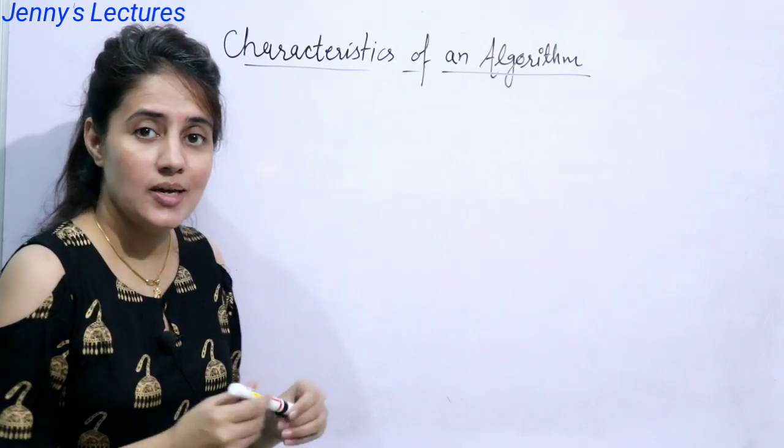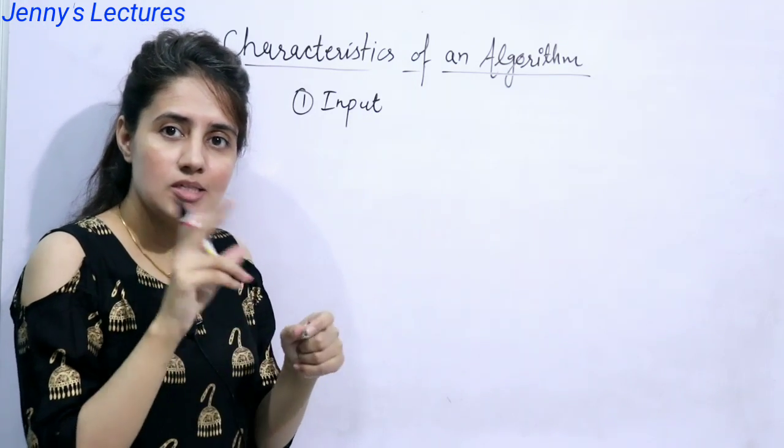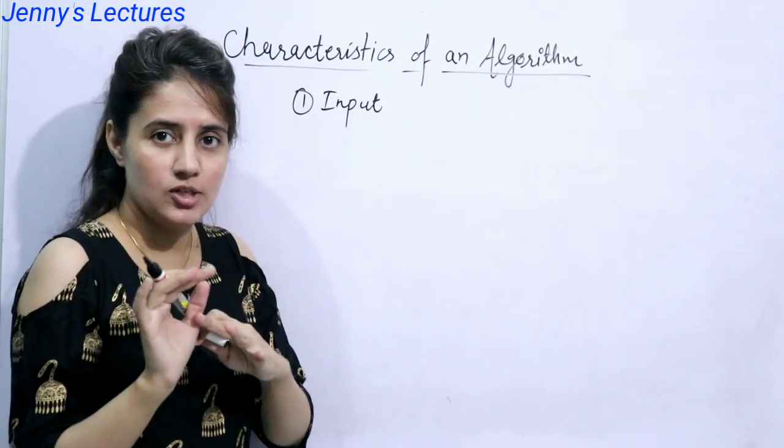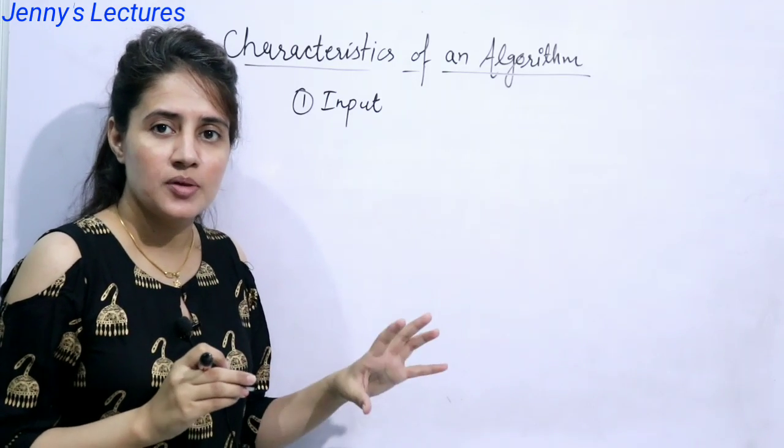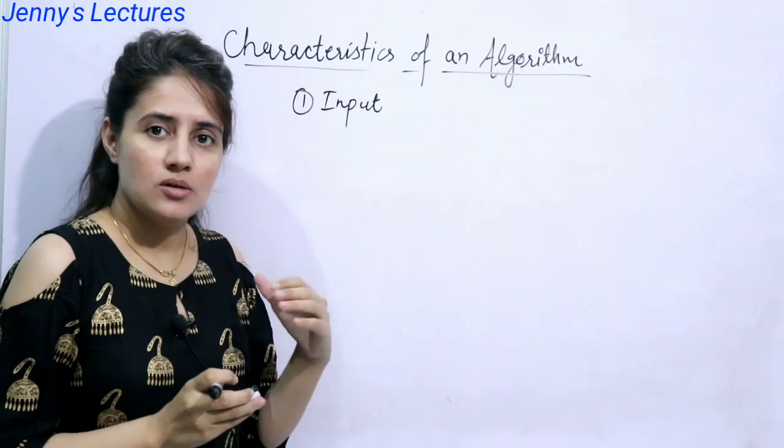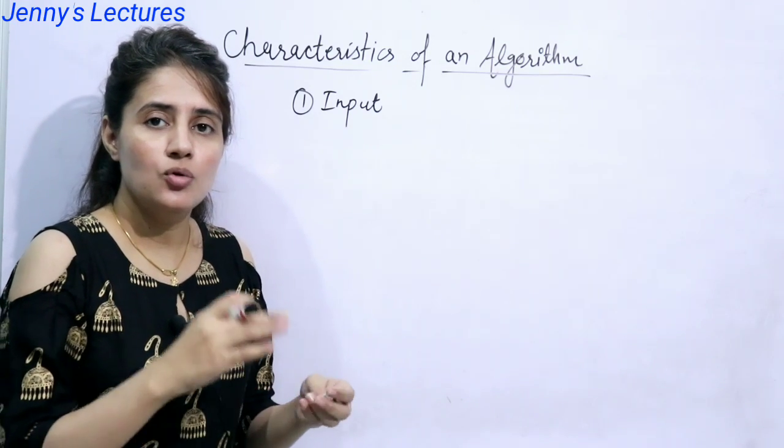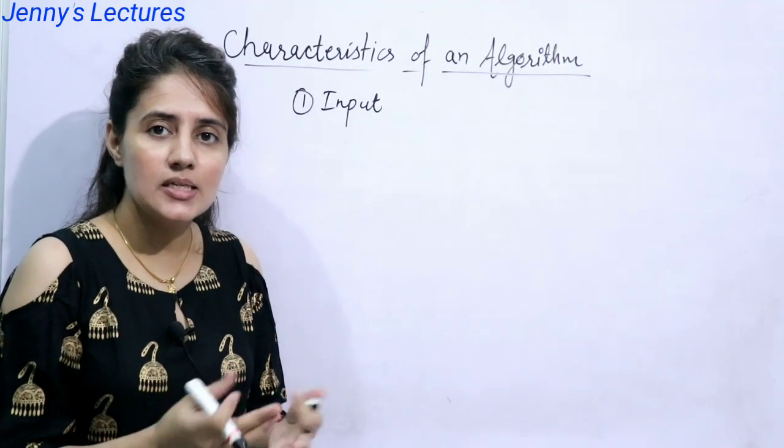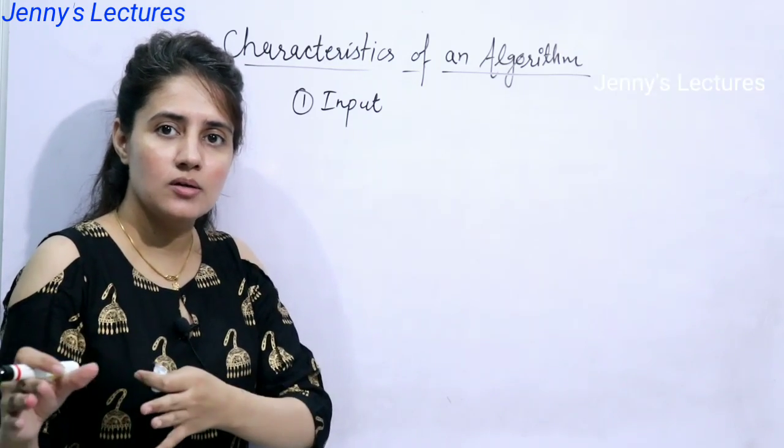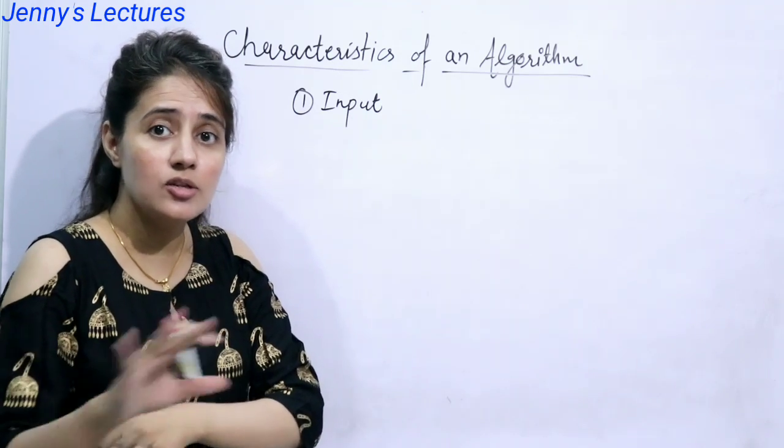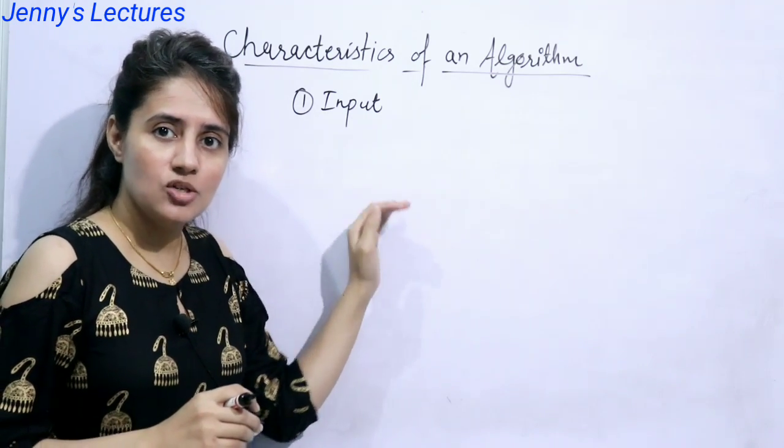First one is input. It means an algorithm can have zero or more inputs. It's not like that algorithm must have at least one input. No, there may be an algorithm which accept no input. Like if you want to print hello world, in that case, the input is nothing, you are just printing hello world. There is only output, there is no input. So algorithm may contain zero input.